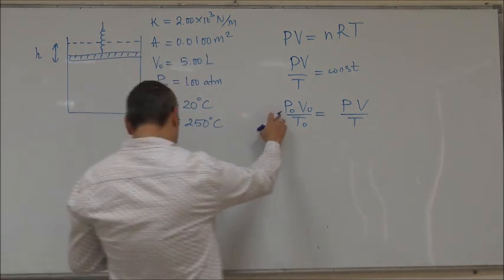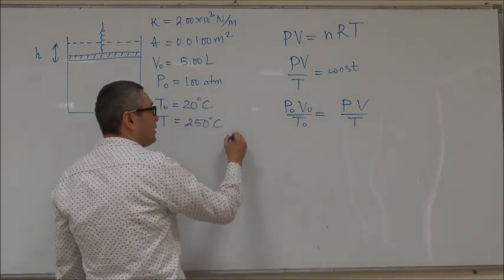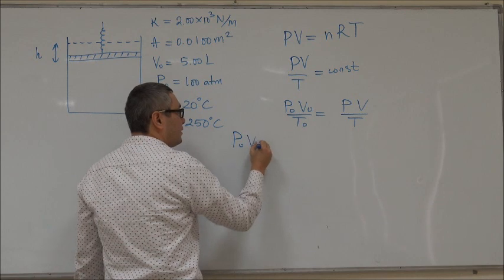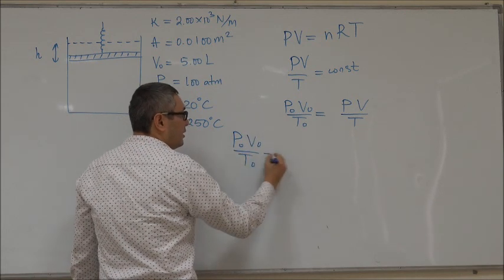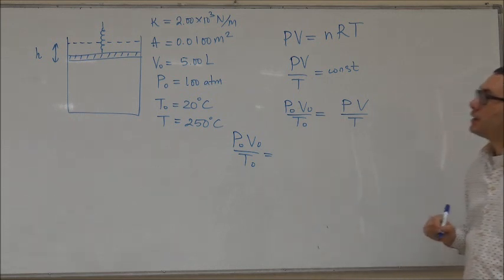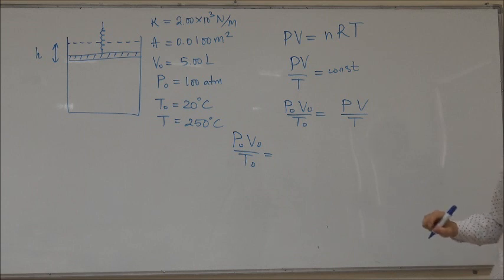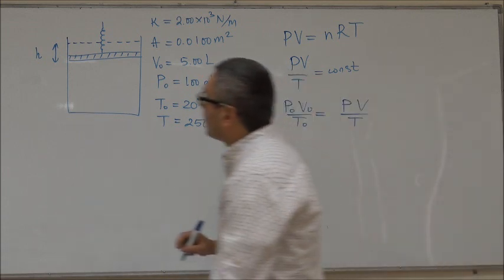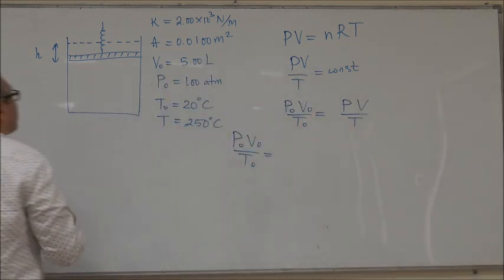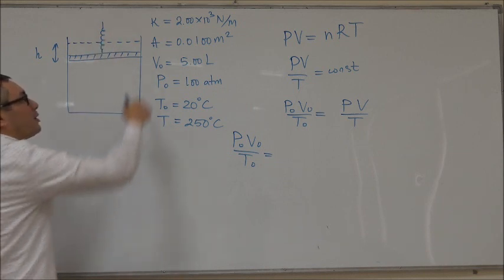So this will be P₀V₀ over T₀. After the expansion the pressure will increase - the pressure will be bigger. We can calculate that increase in pressure because we know the force that the spring exerts on the piston and we know the cross-sectional area of the piston.